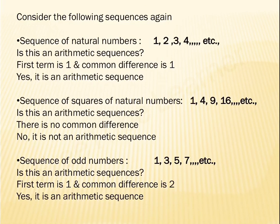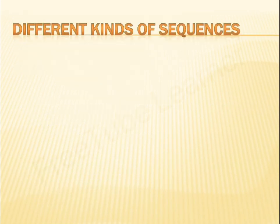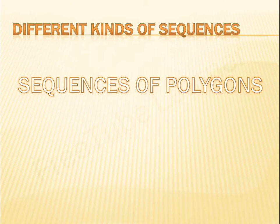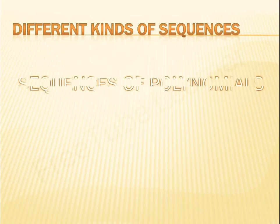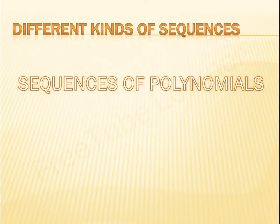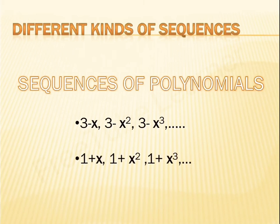So we learned about number sequences and how a number sequence can become an arithmetic sequence. There are also different kinds of sequences. For example, sequences of polygons: a 3-sided polygon (triangle), 4-sided (square), 5-sided (pentagon), 6-sided (hexagon), and so on. There are also sequences of polynomials, for example: 3 − x, 3 − x², 3 − x³, or 1 + x, 1 + x², 1 + x³.